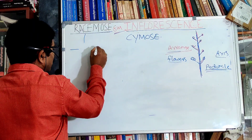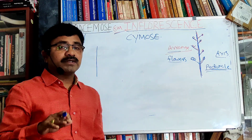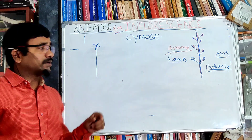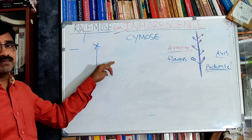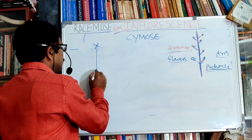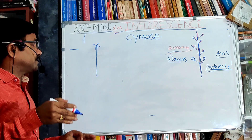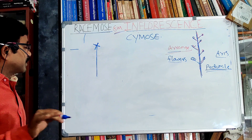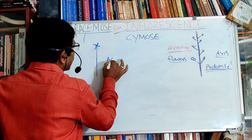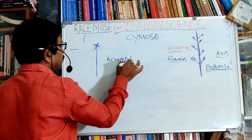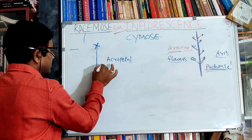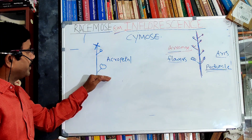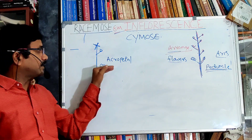In racimose inflorescence, the growth of the peduncle is unlimited — the peduncle shows continuous growth and does not terminate into a flower. Flowers are arranged in an acropetal manner, meaning the basal part shows older flowers, and flower formation proceeds from base to apex.